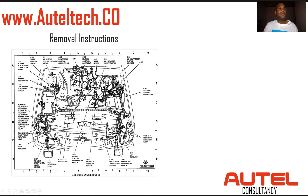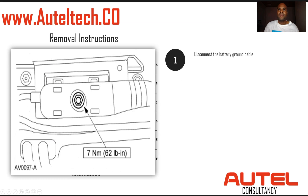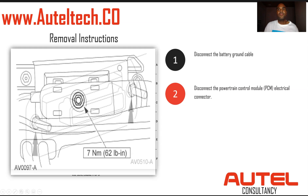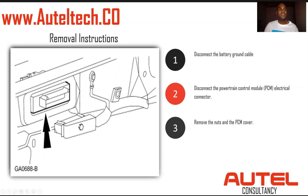The PCM on this vehicle is located in the back — you can see it there, number four. To remove it, disconnect the battery ground cable, disconnect the powertrain control module from the electrical connector, and then remove the nuts from the PCM cover. Then you can pull it right out.